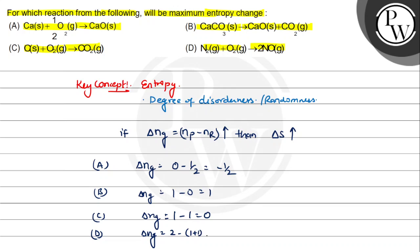And for option D, ΔNg is 2 minus (1 + 1), which equals 0. Positive value only in option B, which has the maximum entropy change. So the right option is option B. Hope you understood it well, best of luck.